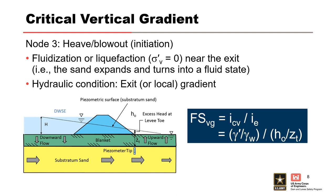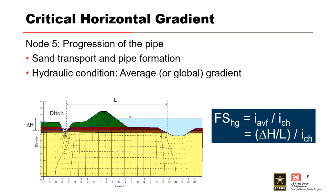Two types of hydraulic gradients are evaluated for backward erosion piping. Node 3 assesses the likelihood of heave or blowout, involving fluidization or liquefaction near the exit — the classic Terzaghi zero-effective stress condition. There is a critical gradient above which soil particles are detached, assessed using exit or local gradients. The factor of safety represents an upper bound, and initiation occurs at significantly lower values in many cases. Node 5 assesses the hydraulic condition for progression of the pipe upstream or riverward, considering sand transport and pipe formation, assessed using average or global gradients.